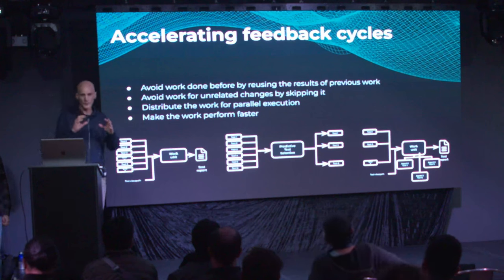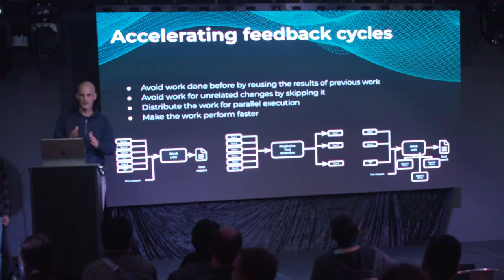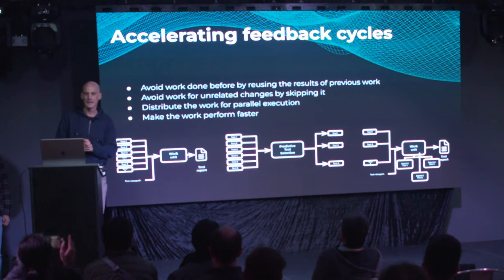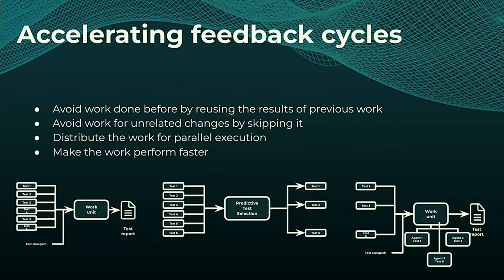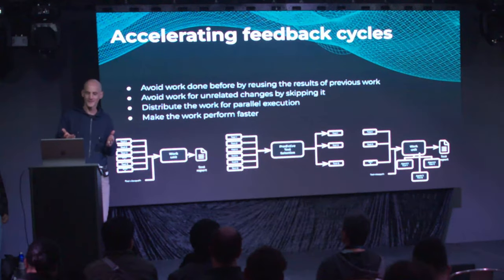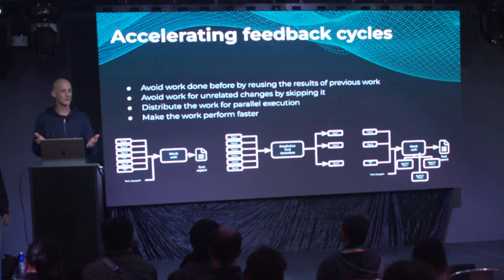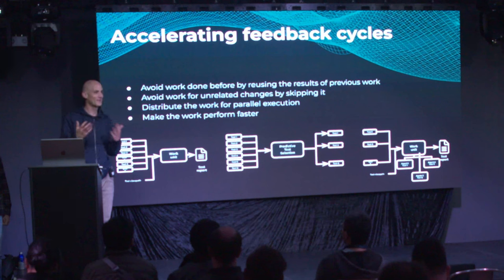If you look more into accelerating the feedback cycle — which is what today is about — we have several approaches. We can avoid work by reusing work that has been done before. We can also avoid work by skipping work not related to the changes we made. And whenever we need to do work, we can parallelize it. We can also make the work itself faster.